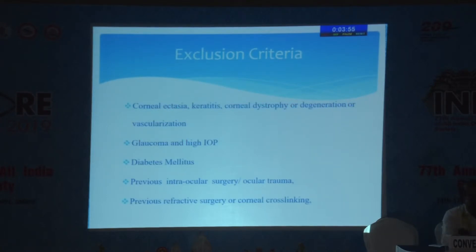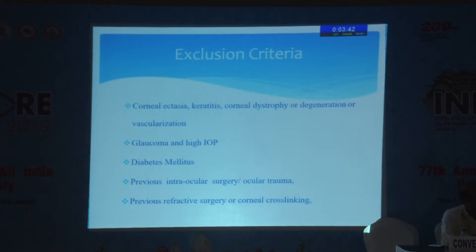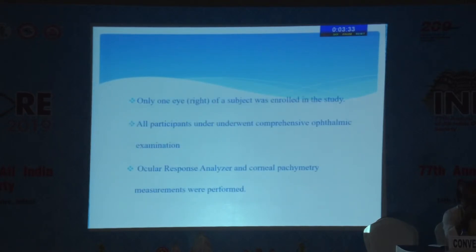We excluded all ophthalmic corneal conditions which affected the cornea's structure and hence its lamellar arrangement, leading to altered biomechanical properties — such as corneal ectasia, keratitis, dystrophy or degeneration, vascularization, diabetes mellitus, any previous intraocular surgery like refractive surgery or corneal cross-linking, and glaucoma with high IOP.